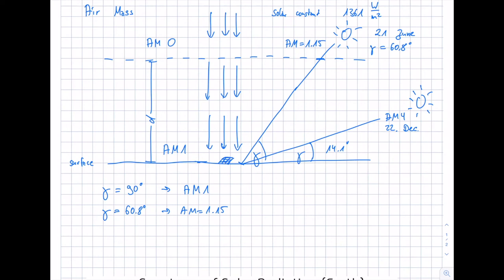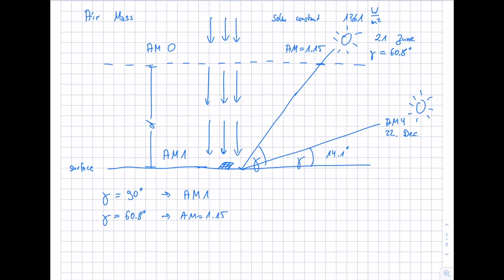From the dependency of elevation angle gamma and air mass — for example, 14.1 degrees gives air mass 4 — we derive that the air mass equals one over the sine of the elevation angle gamma. The larger the elevation angle, the smaller the air mass, and the minimum air mass value is one.